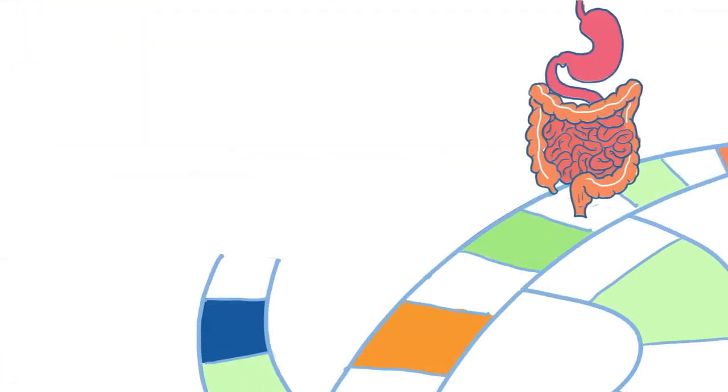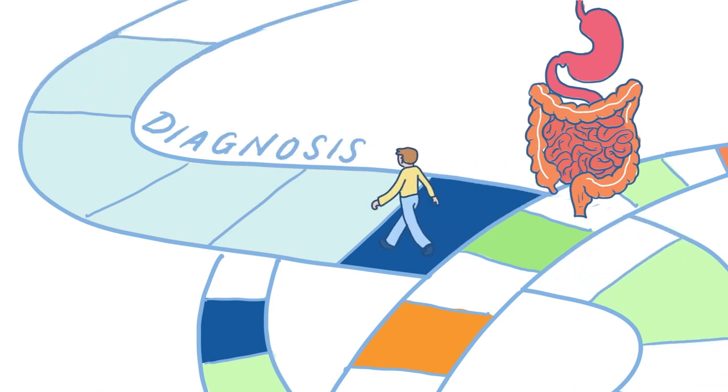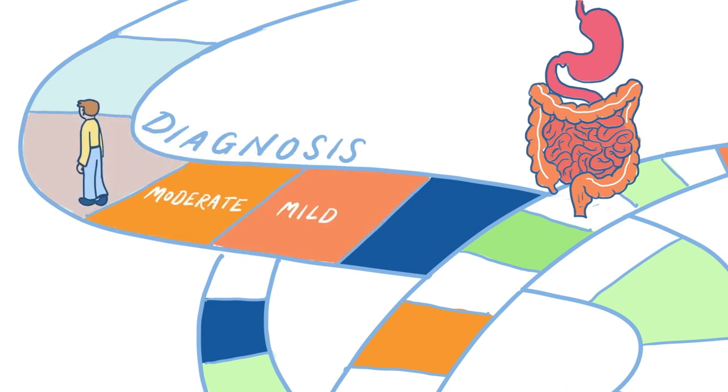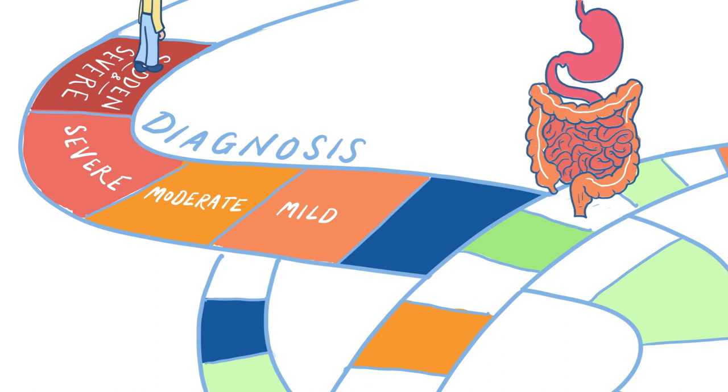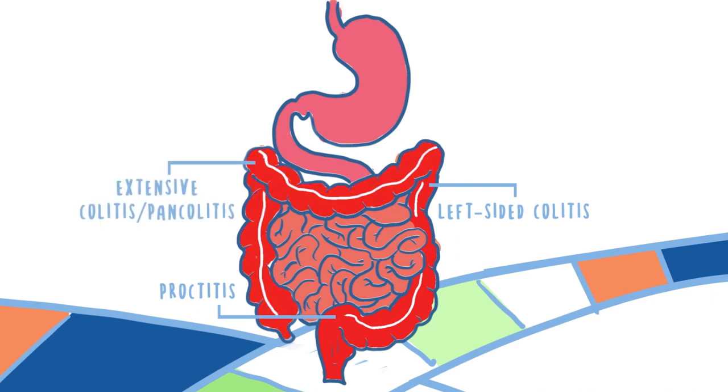Ulcerative colitis starts at the rectum and increases in a continual pattern throughout the colon. It presents uniquely in each person, so a diagnosis can differ by its severity, such as mild, moderate, severe, or sudden and severe, and by its extent into the colon. This can be proctitis, left-sided colitis, or extensive colitis, also known as pancolitis.